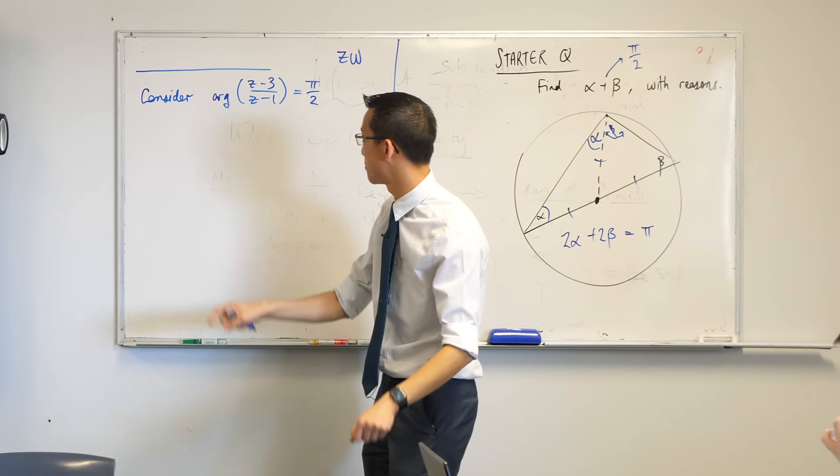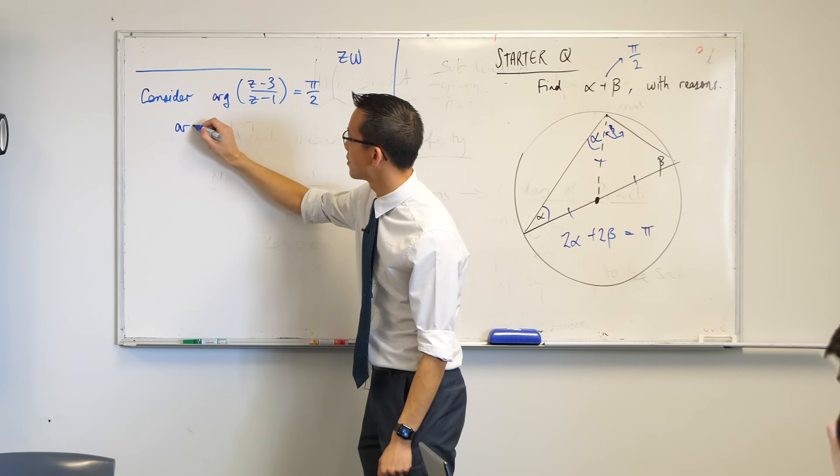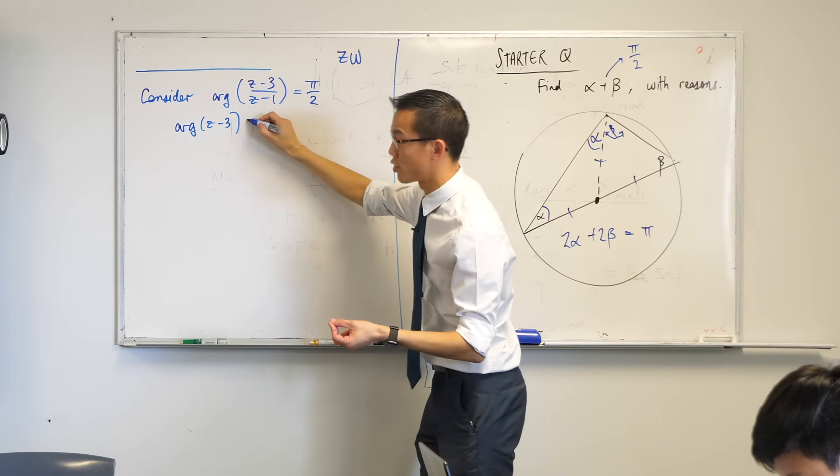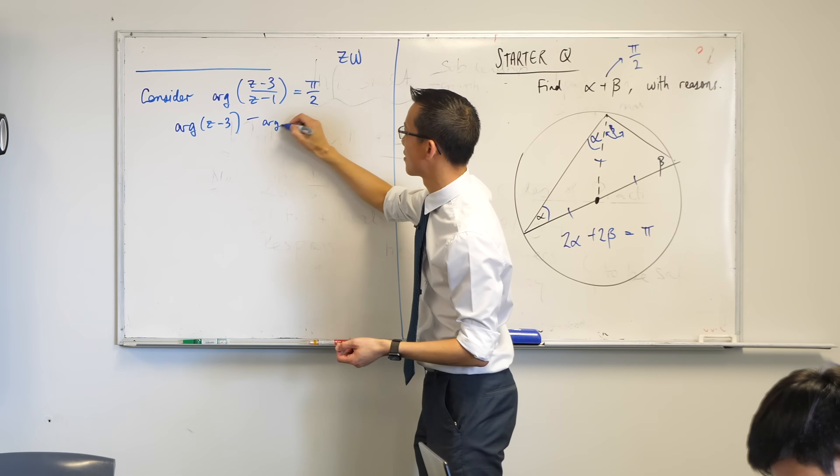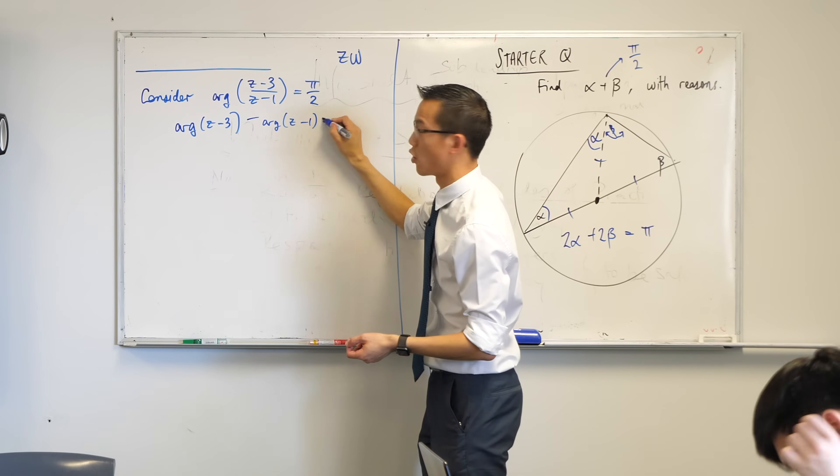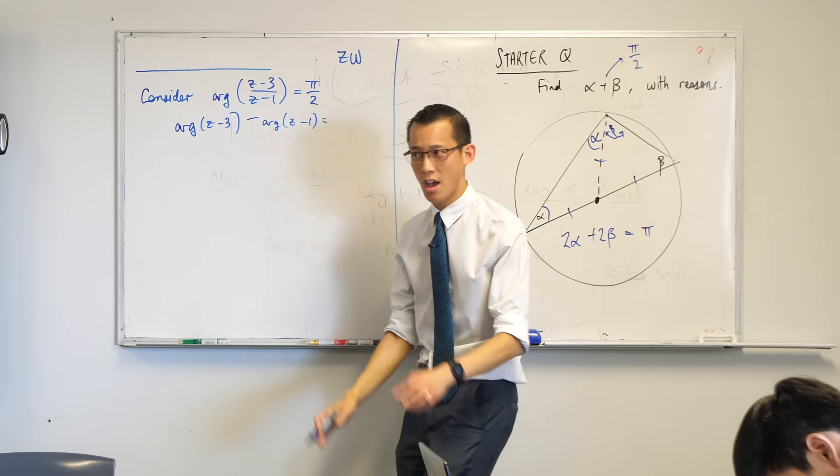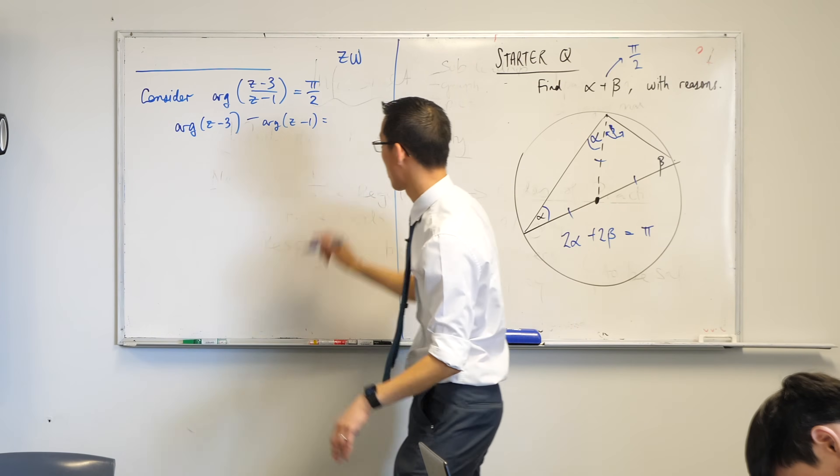What I can do is I can start to write this in a simpler form. I can tease it out a little bit by saying the argument of that first complex number, if you subtract the argument of the second complex number, you'll end up with the argument of the quotient. Are you okay with that?